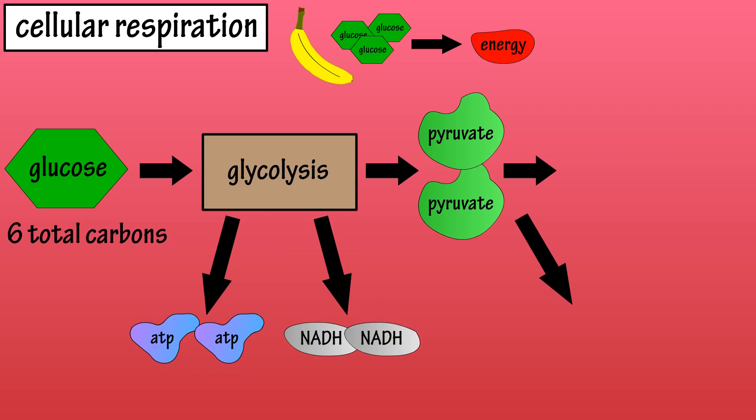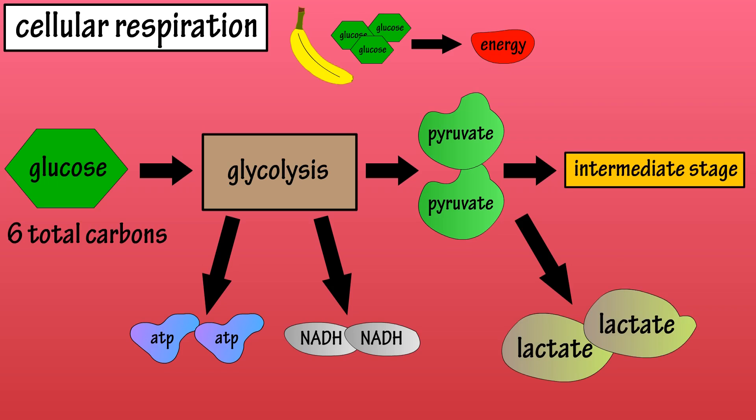The pyruvates that are produced have two pathways. If sufficient oxygen is available, they will enter into the intermediate stage. And if oxygen is not available, pyruvate is converted to lactate. We will cover this pathway in depth in a later video.